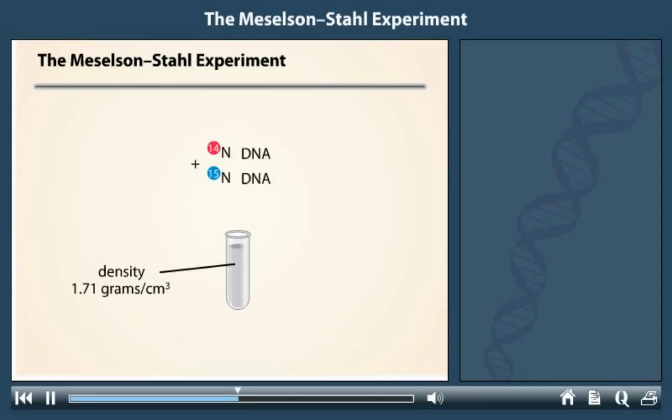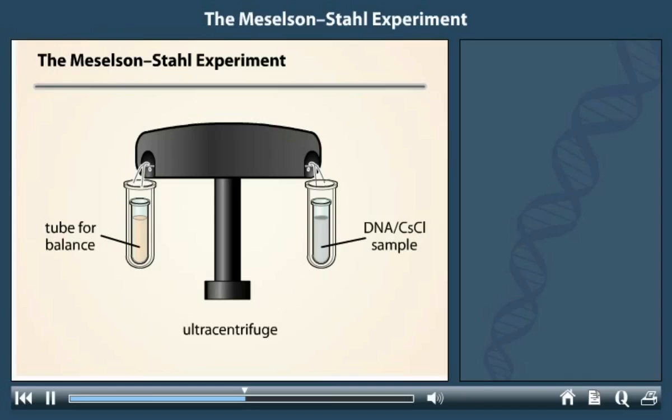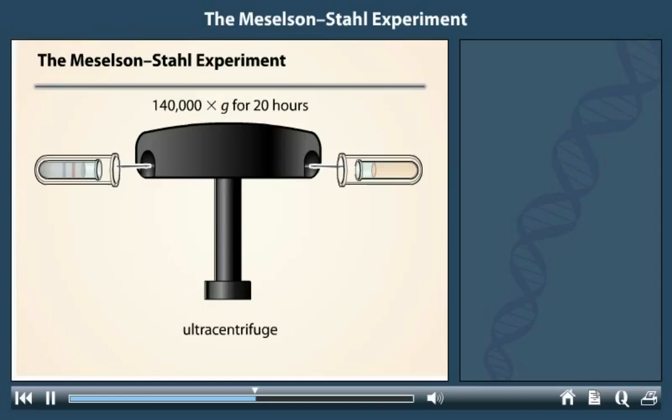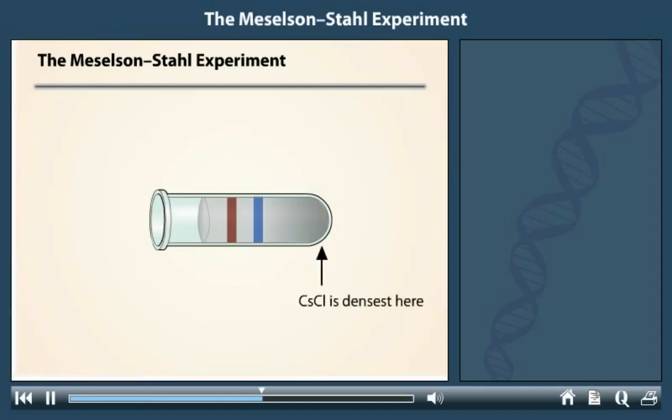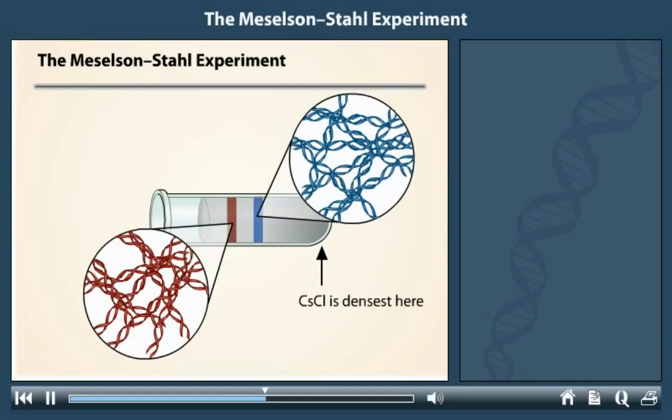The tube was placed in an ultracentrifuge capable of high-speed centrifugation — 140,000 times the force of gravity for 20 hours. At this high speed, caesium ions have a tendency to sediment toward the bottom of the tube, forming a higher density solution at the bottom compared to the top. Other substances, such as the DNA, move to the position within the tube that matches their own density.